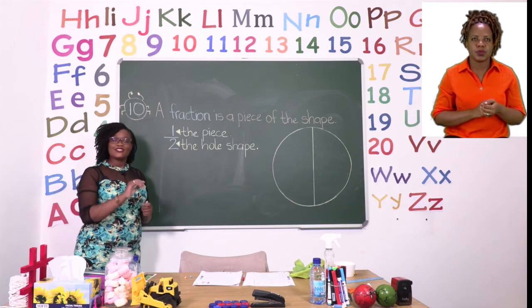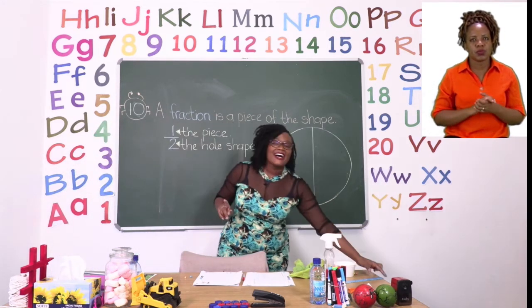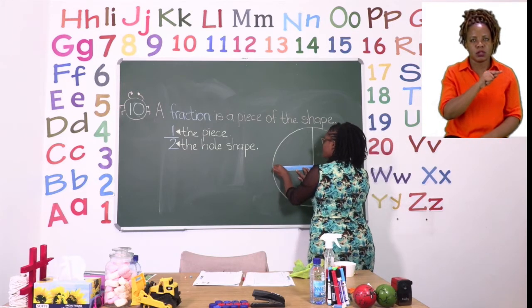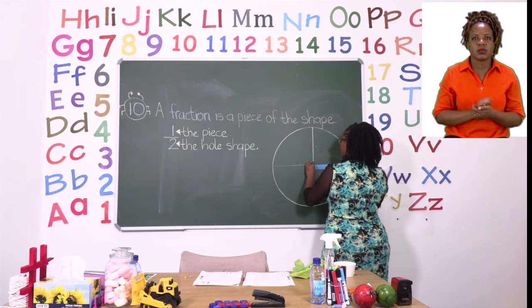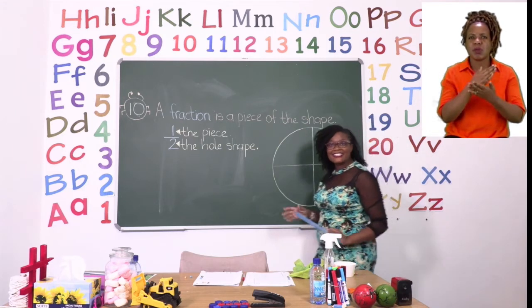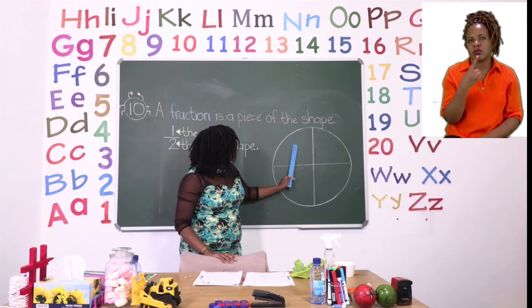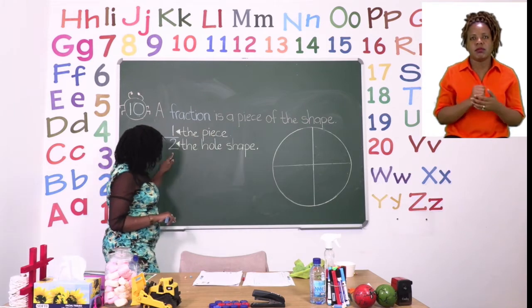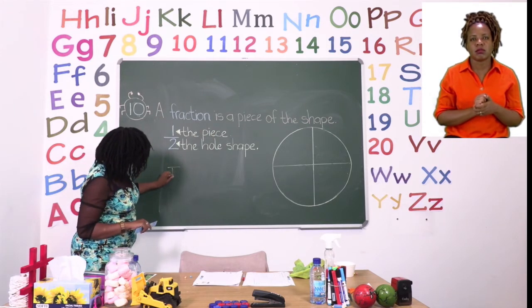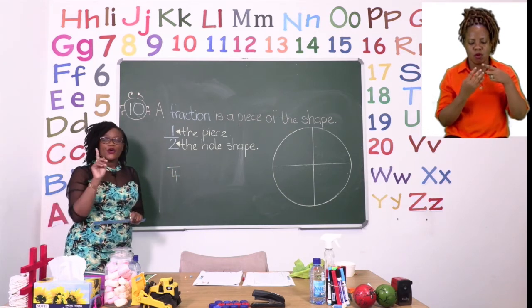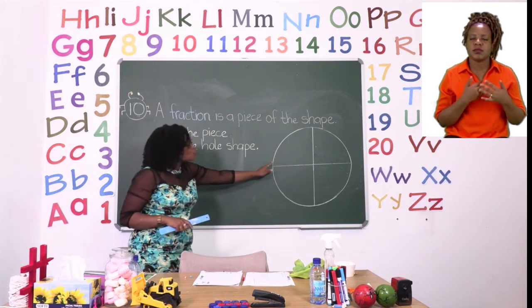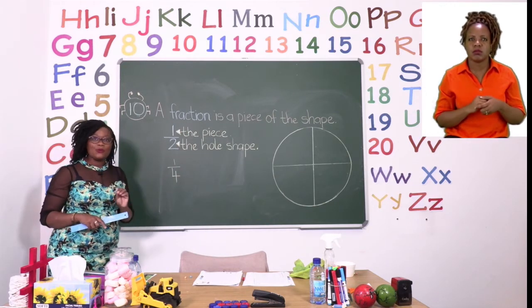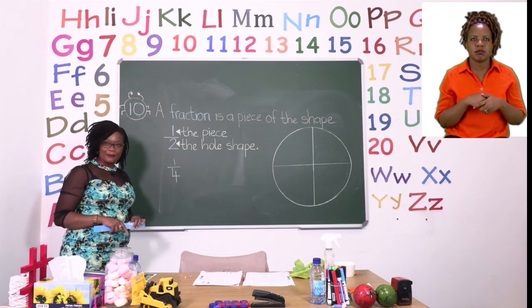If I were to cut the circle again — remember, fractions need to be cut in equal pieces — this time I am going to cut my circle this way. And if I take my ruler and cut my circle, I have now cut it in how many pieces? Let us count together: one, two, three, four. So our two at the bottom will now become a four. And if I only want one part of the circle, we now put a one on top to say this is one quarter of the shape.